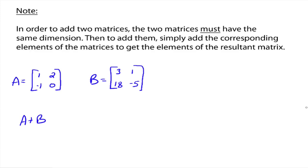All right, so let's go on to the next one. In order to add two matrices, the two matrices must have the same dimension. So you cannot add matrices that have different dimensions. Then to add the two matrices, we simply add the corresponding elements of the matrices to get the resultant matrix. So, for example, if we've got A here, which is a 2 by 2, and B, which is also a 2 by 2.